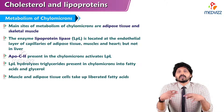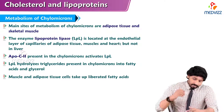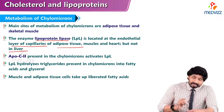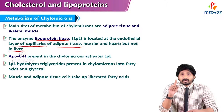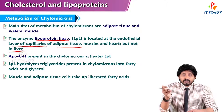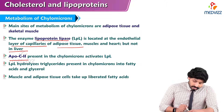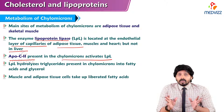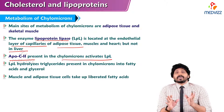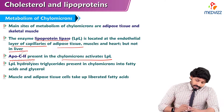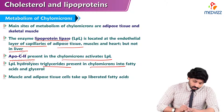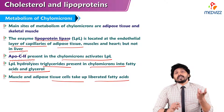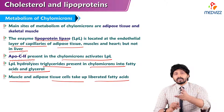The main sites of metabolism of chylomicrons are adipose tissue and skeletal muscles. The enzyme lipoprotein lipase is located in the endothelial layer of capillaries of adipose tissue, muscles, and heart — but not in the liver. ApoC2 present in the chylomicrons activates lipoprotein lipase; this is the main function of ApoC2. This activated lipoprotein lipase hydrolyzes triglycerides present in chylomicrons into fatty acids and glycerol. Muscles and adipose tissue cells take up the liberated fatty acids, and glycerol is transported back to the liver.